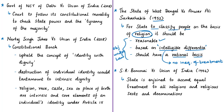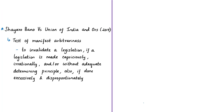In the case of SR Bombay versus Union of India, the Supreme Court observed that the state cannot favor any particular religion and it is the government's duty to accord equal treatment to all religious sects and denominations. In the case of Shayara Bano versus Union of India and others in 2017, the Supreme Court laid down a set of principles called the test of manifest arbitrariness. It observed that if legislation is made in a capricious or irrational manner, or without adequate determining principle, or if done excessively and disproportionately, such a law can be struck down. The term 'capricious' refers to a sudden, unaccountable change of stance by the government.